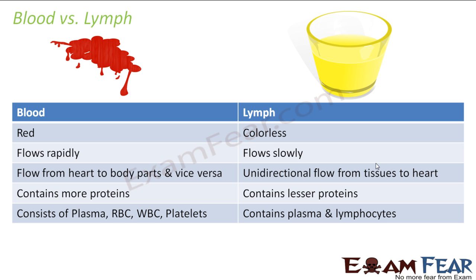The first difference is color: blood is red, lymph is colorless. Blood flows rapidly because it is enclosed in blood vessels and controlled by the pumping organ — the heart — giving it high pressure. Lymph flows slowly. Blood flow is bidirectional — from the heart to the body and back — whereas lymph flow is unidirectional, only from tissues to the heart. Blood contains more proteins; lymph contains fewer proteins. Blood consists of plasma, RBCs, WBCs, and platelets, whereas lymph consists of plasma and lymphocytes — the cells of lymph are called lymphocytes.